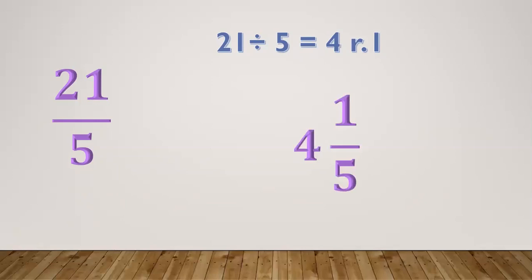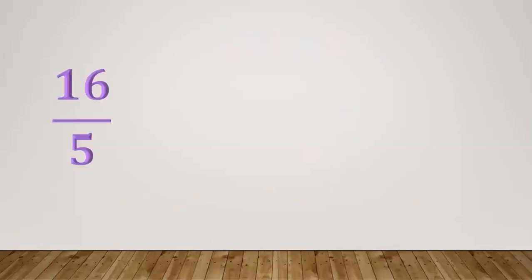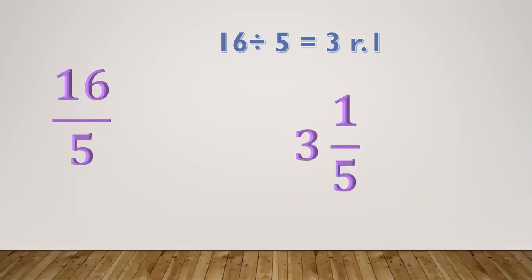Another example: 16/5. Divide 16 by 5 equals 3 remainder 1. So 3 is the whole number, 1 is the numerator, and copy the denominator 5. The mixed number is 3 and 1/5.